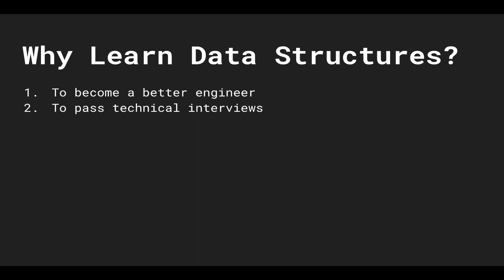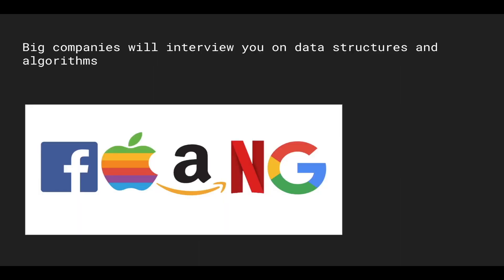The second benefit is to pass technical interviews. Big companies will interview you on data structures and algorithms. Facebook, Apple, Amazon, Netflix, and Google will 100% test you on these because when you're an engineer there, your code needs to be performant for millions of users every day. Even if you're not interested in FAANG, mid-sized companies now expect candidates to have a solid understanding of computer science theory, data structures, and algorithms — it's just like eating your vegetables, allowing you to reason about code in a more sophisticated and clean way.